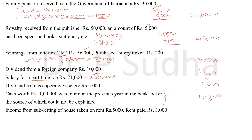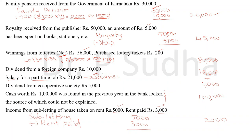Income from subletting: house taken on rent is 5,000 rupees, and rent paid is 3,000 rupees. You have to identify which is income and which is expense. The house is sublet for 5,000 — that is income; rent paid of 3,000 is the expense. In the particulars column write 'income from subletting', write the income of 5,000 in the inner column, deduct the expenses of rent paid 3,000 rupees, and bring 2,000 rupees to the outer column.